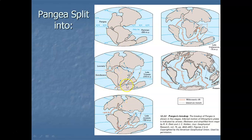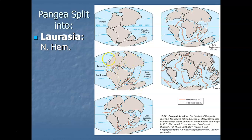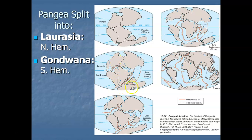Here's Pangea 250 million years ago with the outline of the continents we have today. Wegener said Pangea split into two giant continents: a northern hemisphere continent he named Laurasia — basically North America, Europe, and Asia — named after the St. Lawrence River and the Laurentian Upland of Canada. Then there was a southern hemisphere landmass.